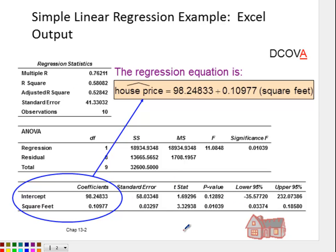Alright, so to figure out the TSTAT, what you have to do is you need to take the coefficient and divide it by standard error. So you have to do it for each line. So for the intercept, you're going to take 98.24833 and you're going to divide it by this 58.03348. That's how you get the TSTAT.